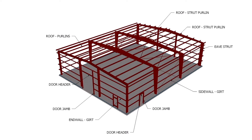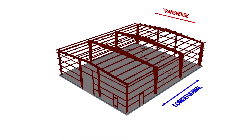Depending on the load being carried, strut purlins can be Z-purlins, bar joists, or other rolled shapes. Lateral loads are characterized as either transverse loads, perpendicular to the side walls, or longitudinal, parallel to the side walls.